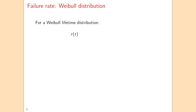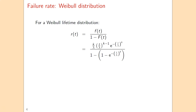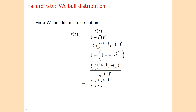Let's see what we get for the Weibull distribution. Using the definition of the failure rate as the density divided by 1 minus the distribution function, in the denominator we have terms that cancel out — the 1 minus 1 cancels, the two minus signs cancel, and the exponential terms in the numerator and denominator cancel out as well, leaving us with a simplified expression.